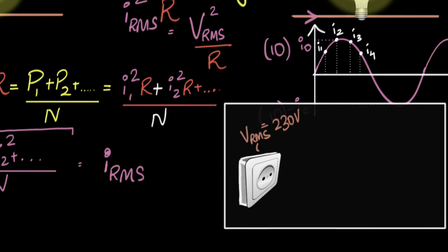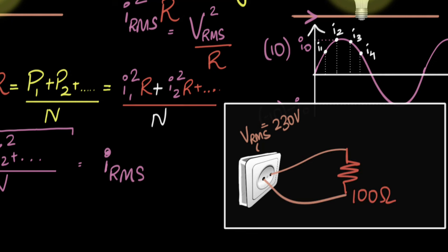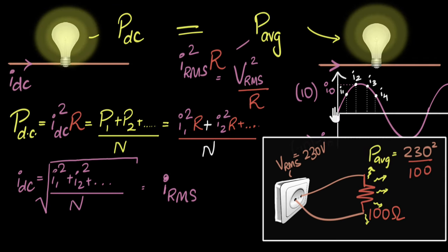Now we can come back to the original question. The reason voltage is given as the RMS value is because if you attach a resistor across it and want to calculate average power — even though current is alternating and power is fluctuating — you just take V_RMS² over R and you're done. What if RMS values are not given? What if they give you the peak value and frequency but not the RMS value? Then you have to calculate the RMS value first.